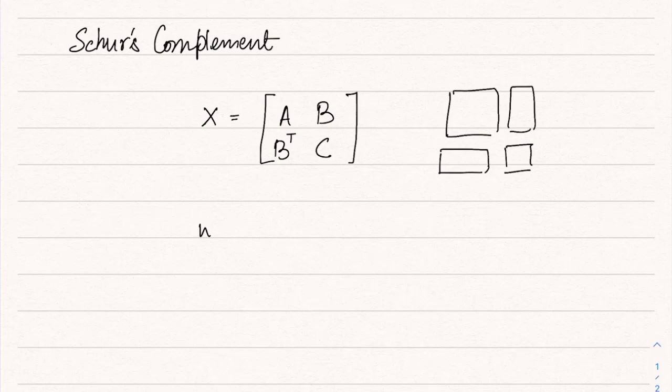And we assume that A is equal to A transpose and C is equal to C transpose. So A and C are both symmetric, and note that this implies that X is also symmetric. So X is a real symmetric matrix in S^(n×n), the space of n by n symmetric matrices.